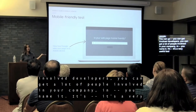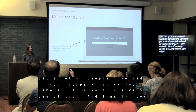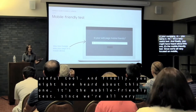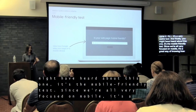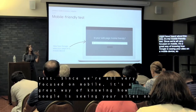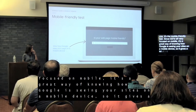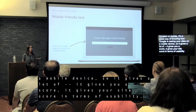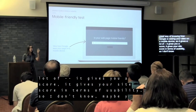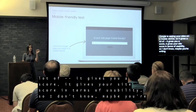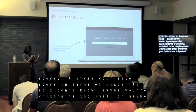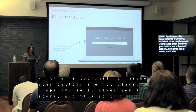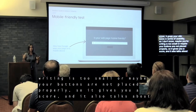Finally, there's the mobile-friendly test. Since we're all very focused on mobile, it's a great way of knowing how Google sees your site on a mobile device. It gives your site a usability score — for example, maybe your text is too small or your buttons aren't placed properly. It also gives you a speed score showing how long it takes your site to load.